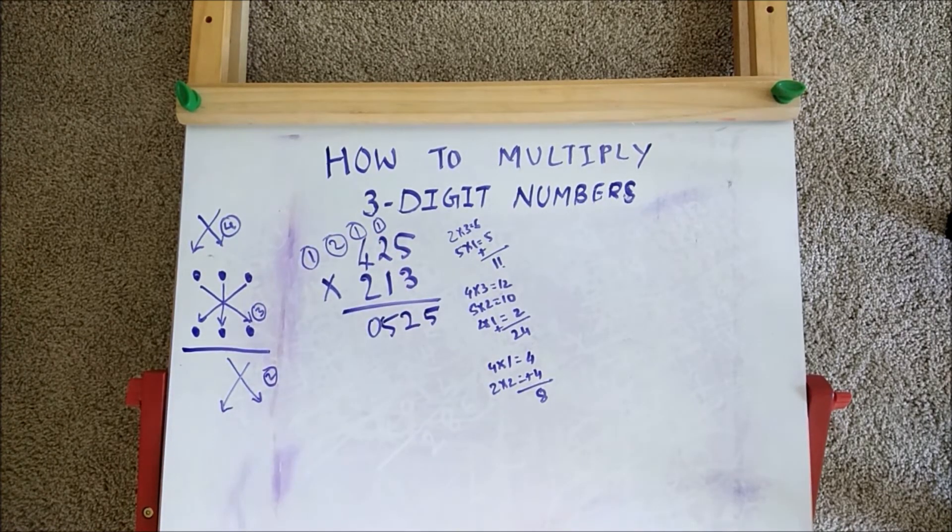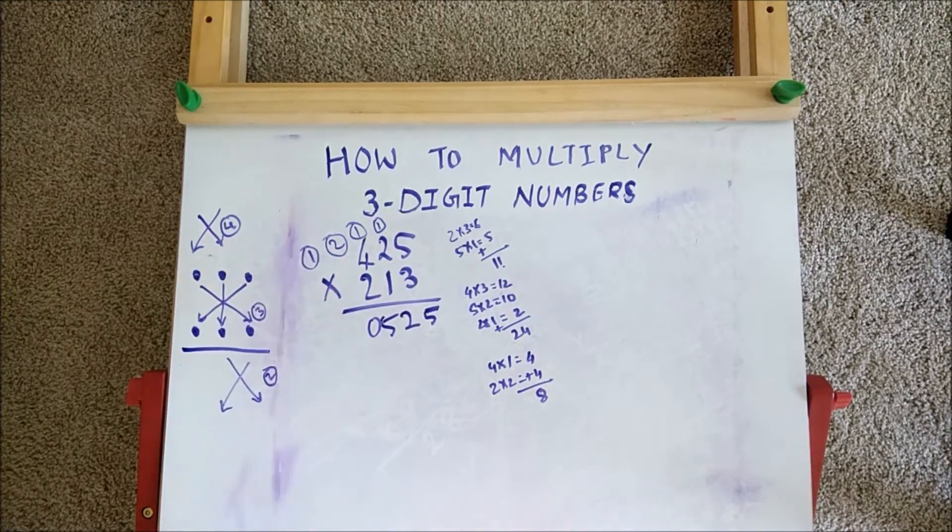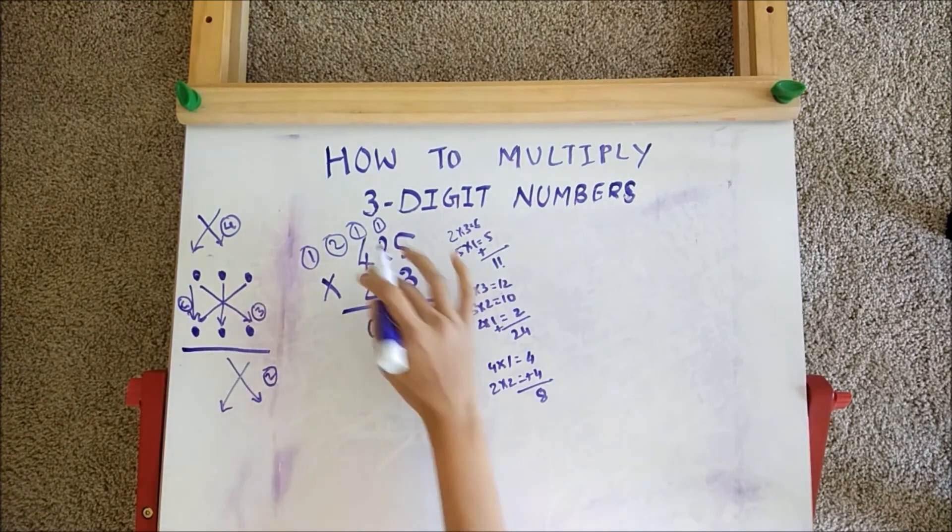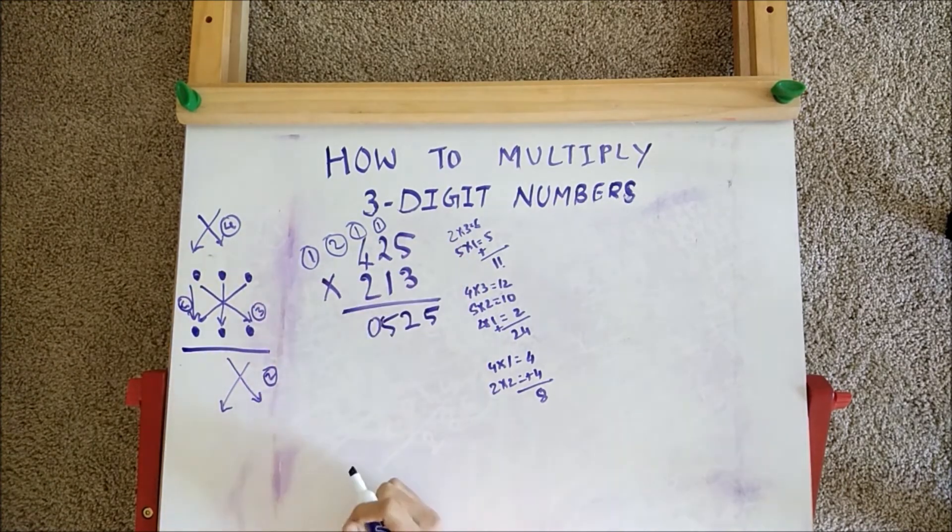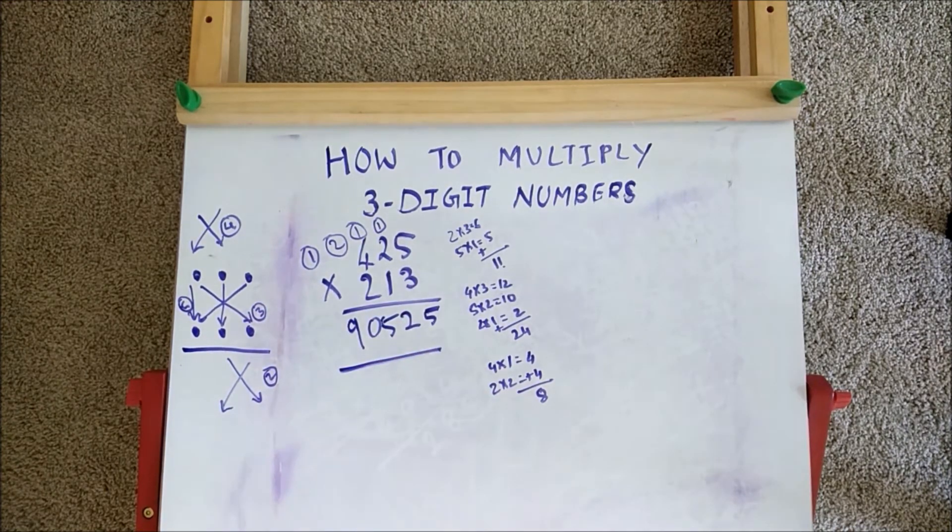Now in the last step, we multiply the numbers in the hundredth place. So 4 times 2 is 8, plus 1 we get 9. This is our final answer. Now let's take one more example.